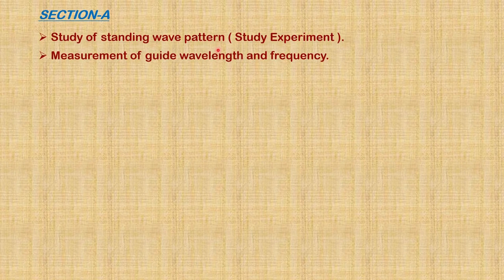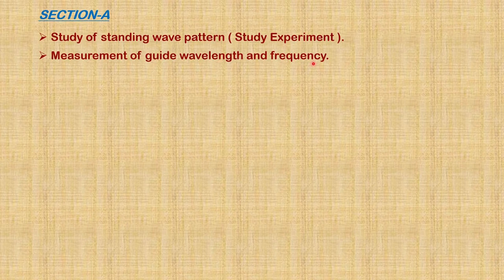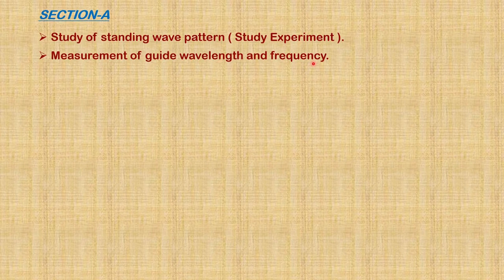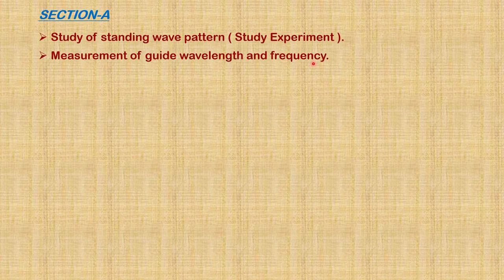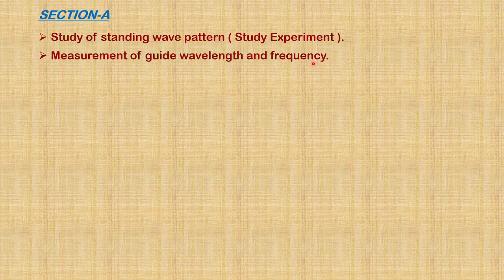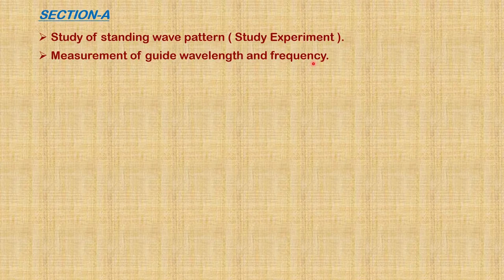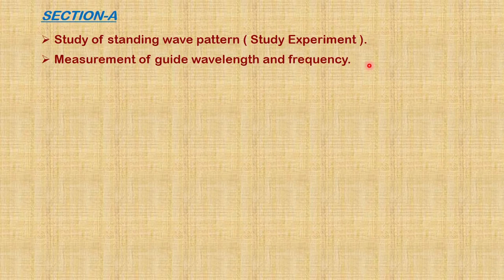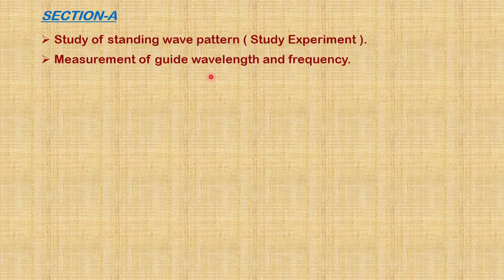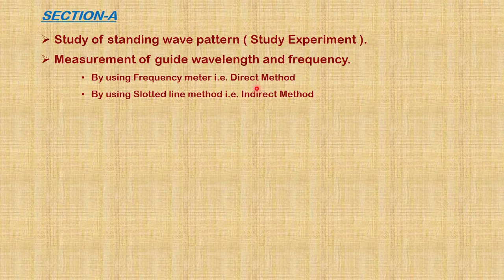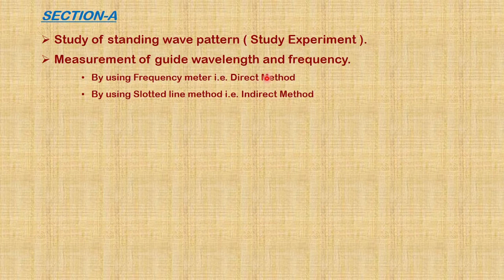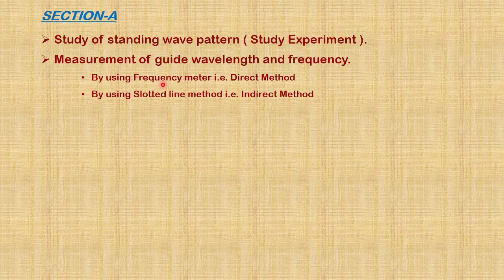The next experiment is measurement of guide wavelength and frequency. When a microwave source generates a signal, it consists of power, frequency, and wavelength. We are going to find out frequency and wavelength using two methods. The first method is the direct method, where by tuning a frequency meter, we are going to find the frequency of the signal.